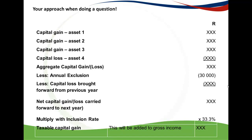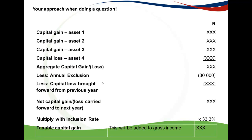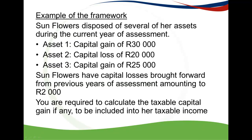The capital gain calculation is done on each disposal of each asset. You will have proceeds and a base cost, so if you take proceeds less base cost you get to the capital gain or loss. That slots into the overall calculation — you add up all of your gains and losses for every asset disposed of, and then apply the rest of the framework.